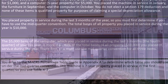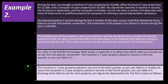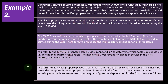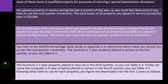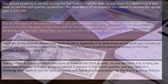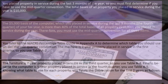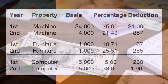Therefore, you must use the mid-quarter convention instead of the half-year convention. You refer to the MACRS Percentage Table Guide in Appendix A to determine which table to use under the mid-quarter convention. The machine is seven-year property placed in service in the first quarter, so you use Table A-2. The furniture is seven-year property placed in service in the third quarter, so you use Table A-4. The computer is five-year property placed in service in the fourth quarter, so you use Table A-5. One major point: if you must switch from half-year to mid-quarter convention because more than 40% of assets were placed in service in the fourth quarter, you need a different table.